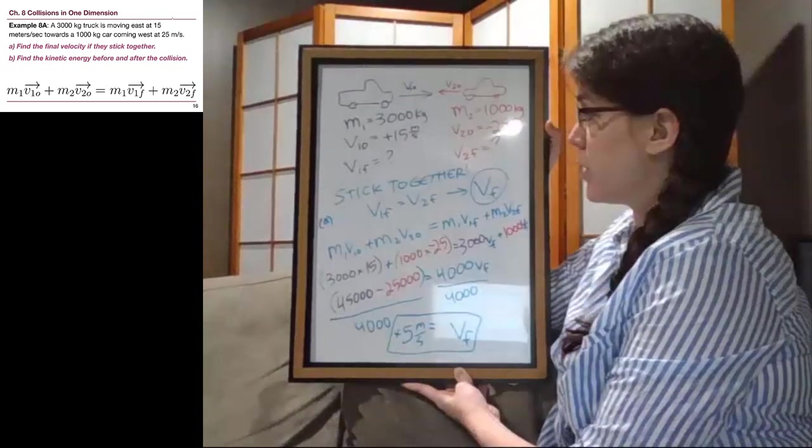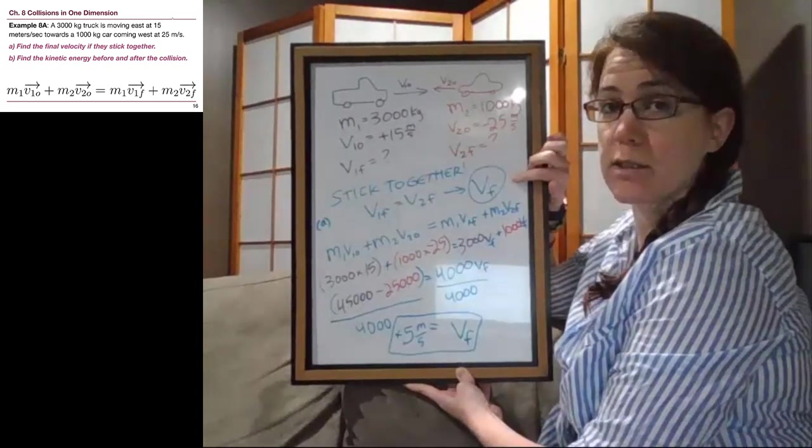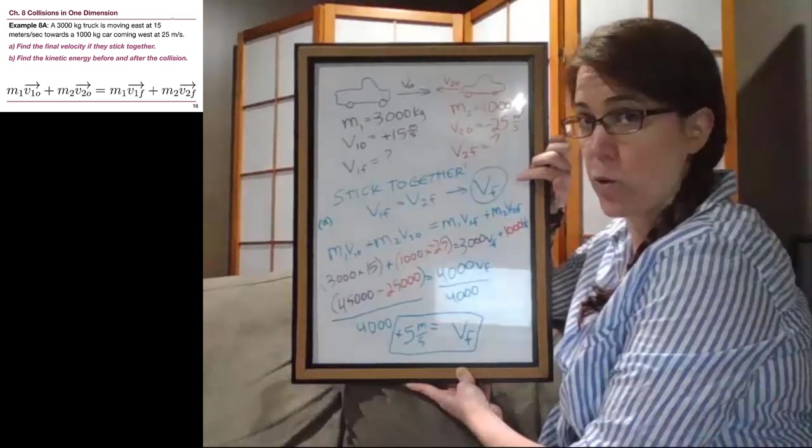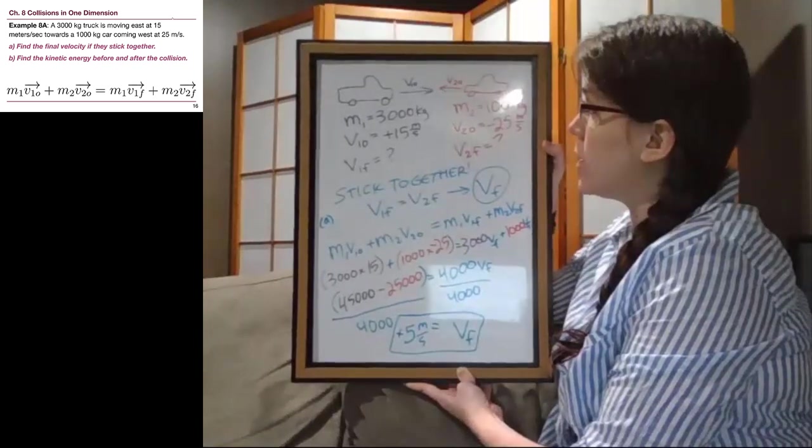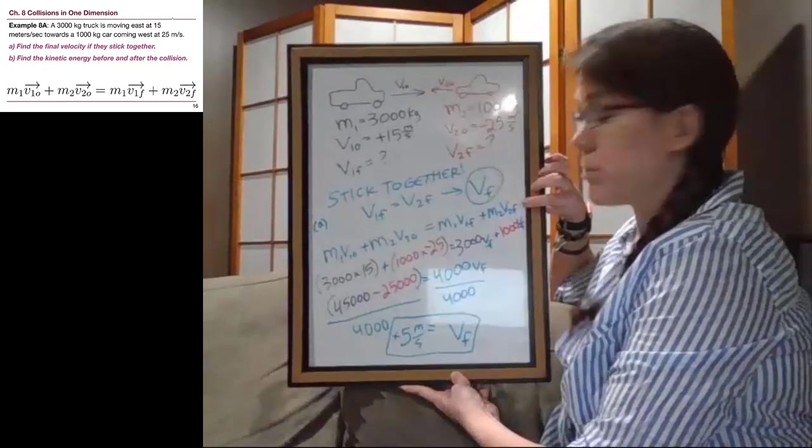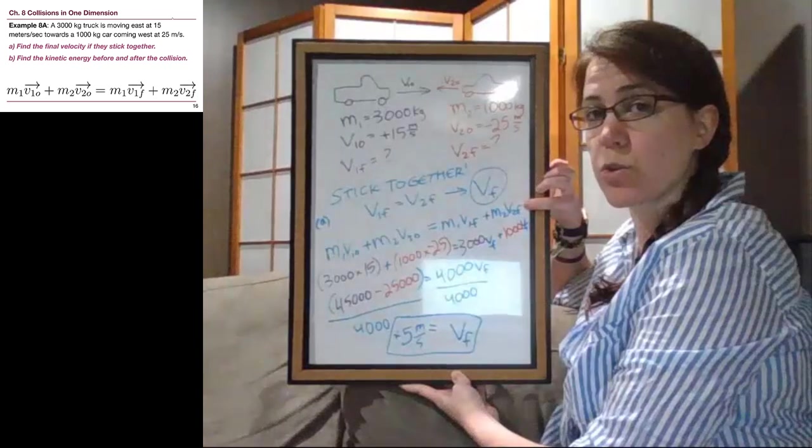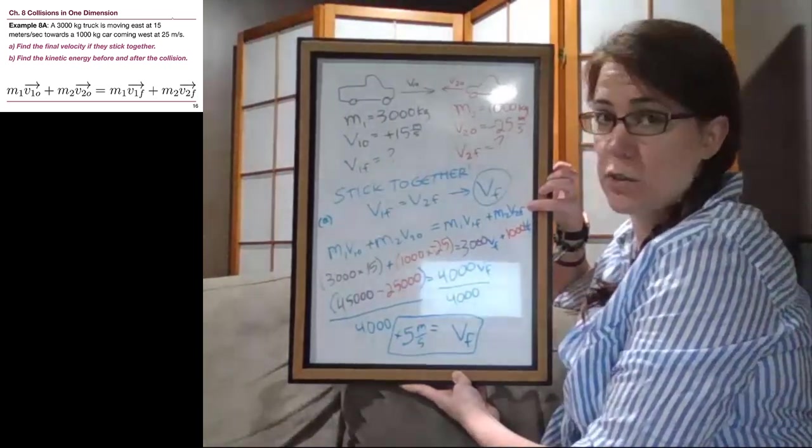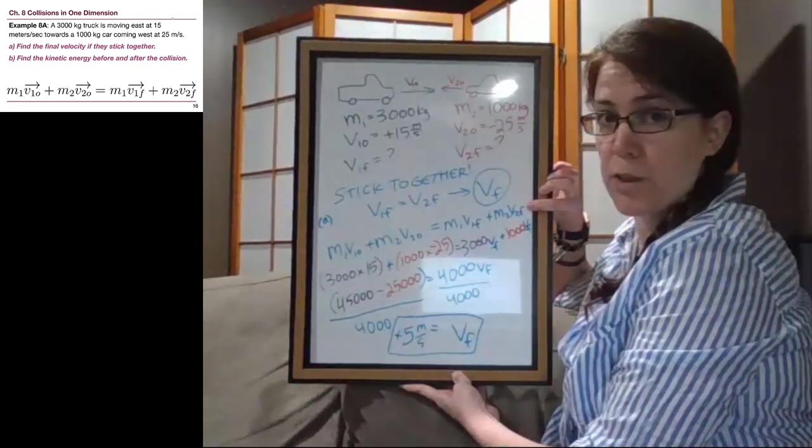When we are looking for that final velocity when objects stick together, the key idea is that we can set their final velocities equal if we're told they stick together. The other thing to note is that we had to use the momentum conservation equation. Part B is here so we can understand that it's not possible to use energy conservation for collisions. Let's go ahead and do part B on the board.